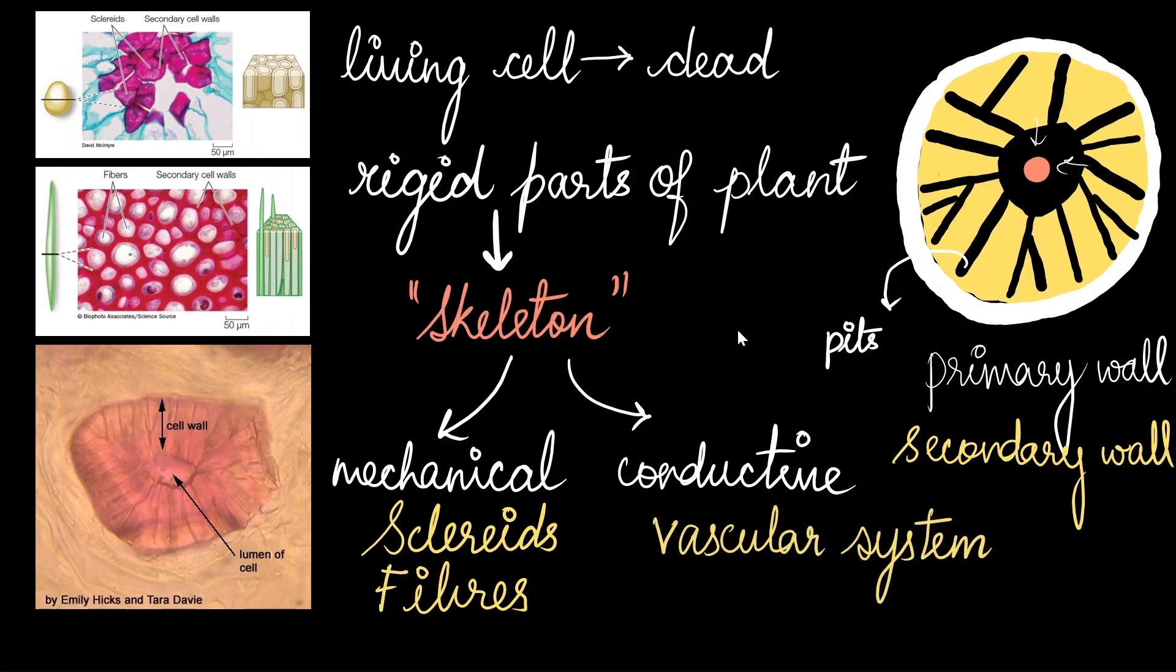There are two types of cells which can give mechanical support. One is your sclereids and the other is fibers. Conductive cells are found in the vascular system, which is the topic for another video.